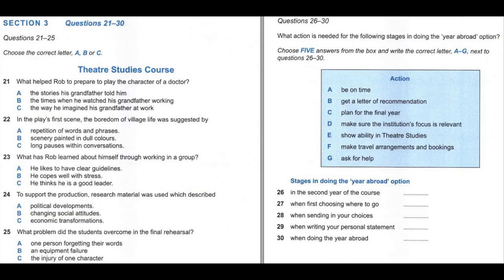Hi, Rob. How's the course going? Oh, hi, Mia. Yeah, great. I can't believe the first term's nearly over. I saw your group's performance last night at the student theatre. It was good. But now we have to write a report on the whole thing — an in-depth analysis. I don't know where to start. I have to write about the role I played, the doctor — how I developed the character. My grandfather was a doctor before he retired, and I just based it on him. He never says much about his work, but he has a sort of authority. I'd visualise what he must have been like in the past, sitting in his consulting room, listening to his patients.